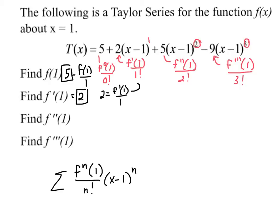Now let's go to the next one. 5, that coefficient must be equal to f double prime of 1 over 2 factorial, which is just 2. Multiply both sides by 2, and f double prime must be 10.